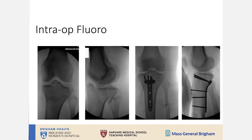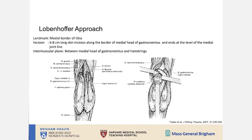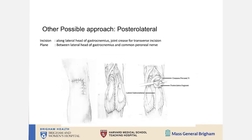When doing posterior approaches, it is of paramount importance that before you start you confirm you can see what you need to see, so you don't get blocked by the contralateral leg. A buttress plate is used to buttress the shear component. The Lobenhofer approach is a modification of the posterior medial approach. You can approach either posterior medial or posterior lateral depending on where you need to go. The posterior lateral is less commonly used due to concern for the common peroneal nerve, and you are more limited distally than from the medial side.